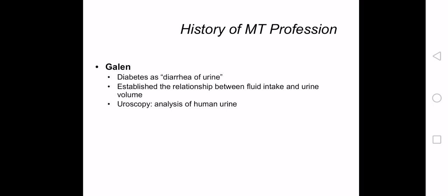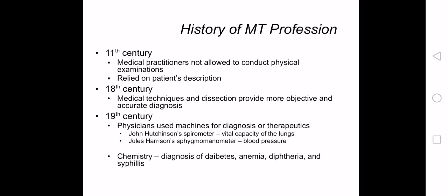From these early documented works, medicine and medical technology advanced because of the high mortality rate caused by plagues and other diseases. In the early 11th century, medical practitioners were not allowed to conduct physical examination of the patient's body, and thus relied only on the patient's description of symptoms. By the 18th century, mechanical techniques and cadaver dissection were used to provide a more objective and accurate diagnosis. By the 19th century, physicians began using machines for diagnosing or therapeutics.